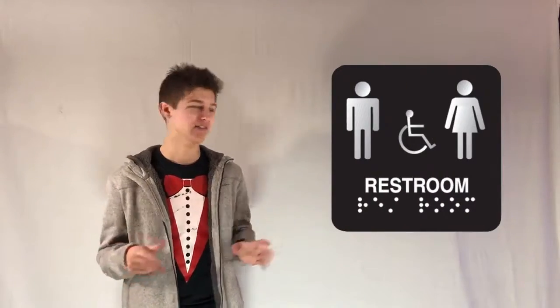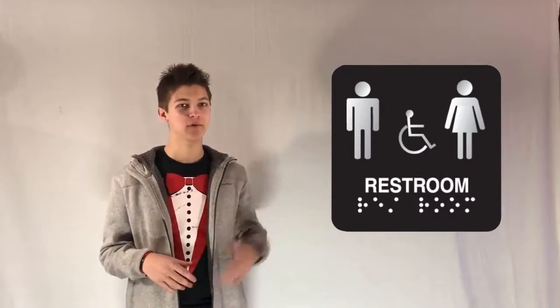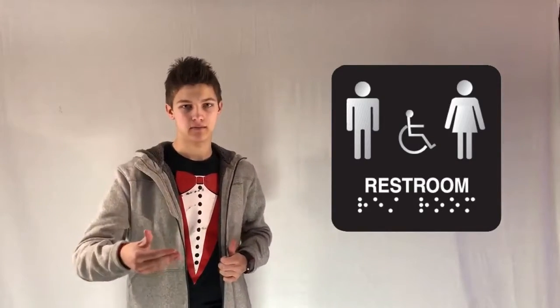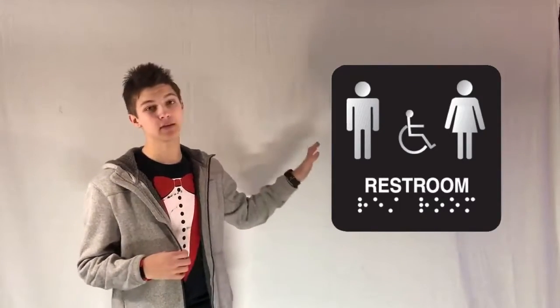Now why is this so important? This language allows visually impaired people to read signs and know where they're going. Now why is this important to you? Well, haven't you looked at those weird signs that have the weird bumps under them and wondered why is there bumps on this? Well it's Braille. It's a language so you can read it and I will teach you how to read it as well.